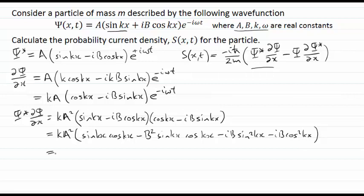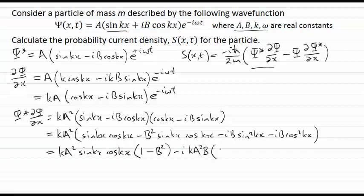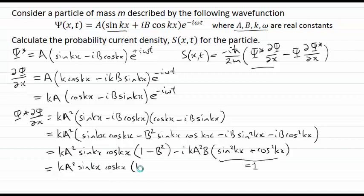Collecting like terms, I get ka² multiplied by sine kx cosine kx times (1 minus b²). And then I also get minus ika²b multiplied by (sine² kx plus cosine² kx). That sine-squared plus cosine-squared equals one by the trig identity, so the final expression for ψ* dψ/dx is: ka² sine kx cosine kx (1 − b²) minus ika²b.